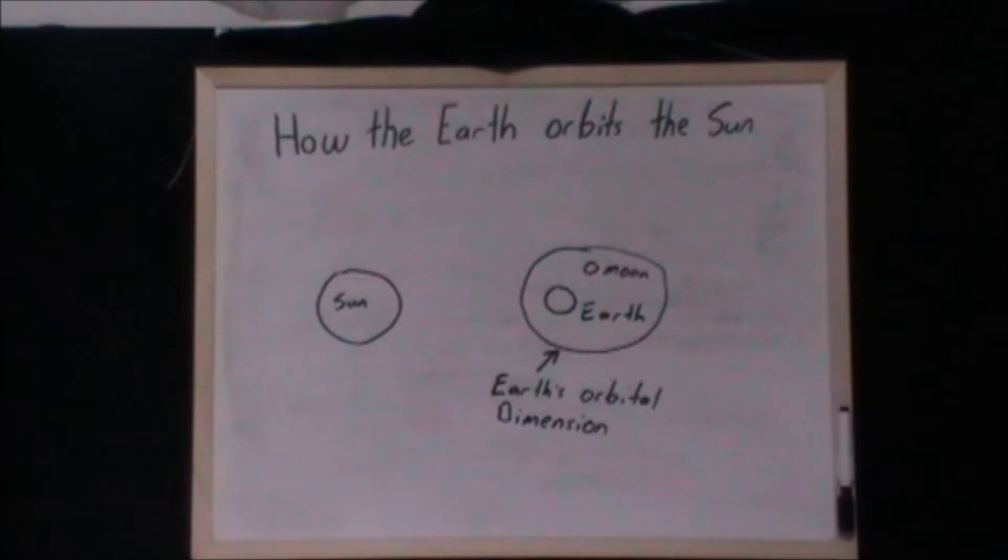And how light enters and exits the Earth's orbital dimension is through angel vision. So when we look at the Sun and we receive light and heat from the Sun, that light is teleported in through the Sun. The Earth's orbital movement is achieved by use of wormholes around this dimension, bringing the Earth's orbital dimension around the Sun.